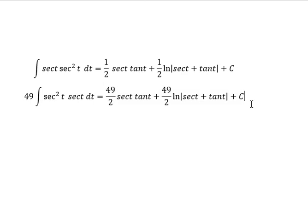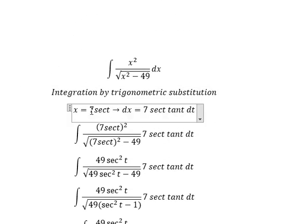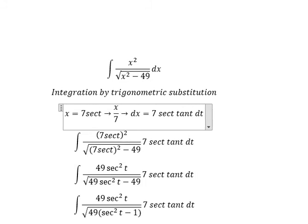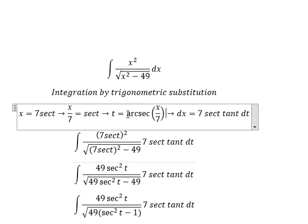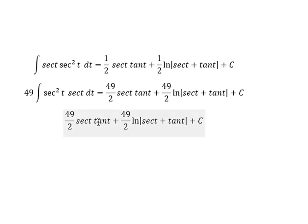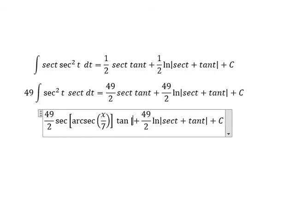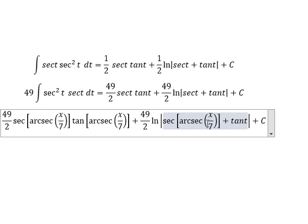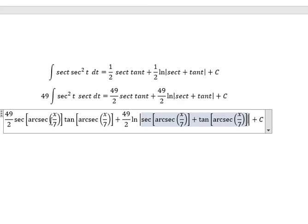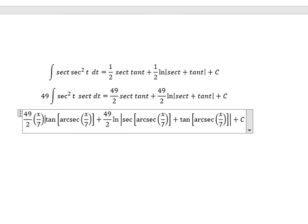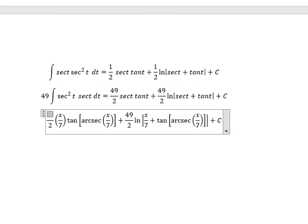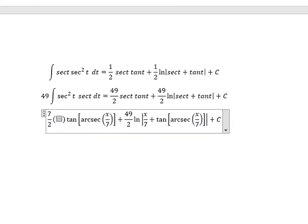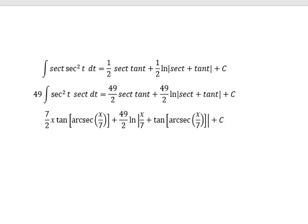Now for t in the expression, we need to return back to the original variable. We divide both sides by 7 and get t equals arcsec(s/7). We substitute this to replace t: sec(t) becomes s over 7, and similarly for tan(t). Simplifying, we get 7 over 2 times s, and this is the final answer. Thank you for watching — here is the full answer to the question.